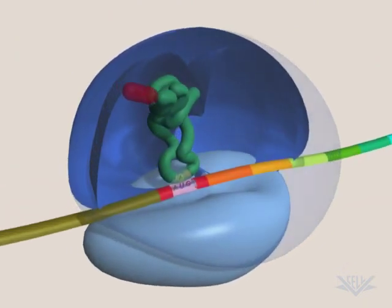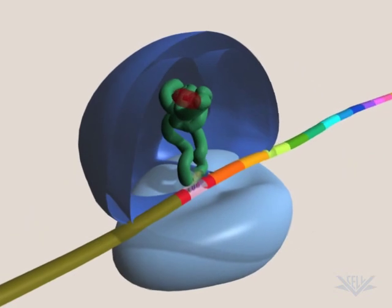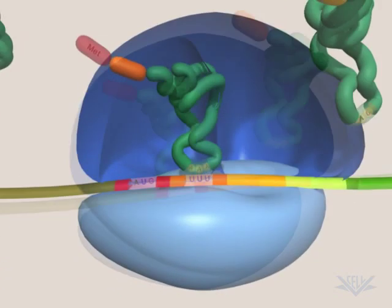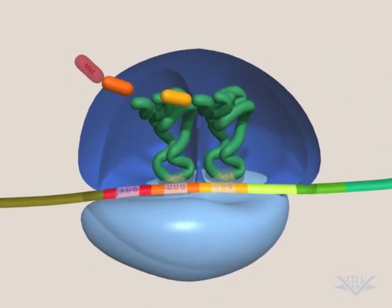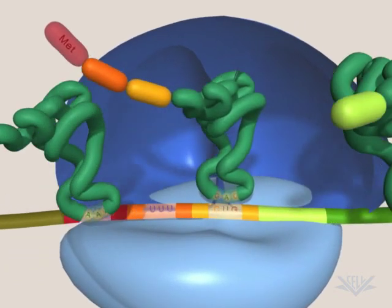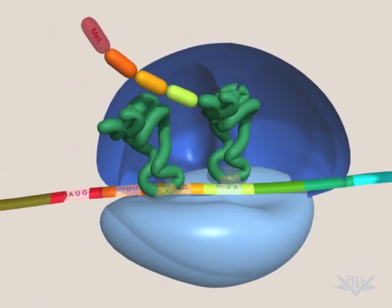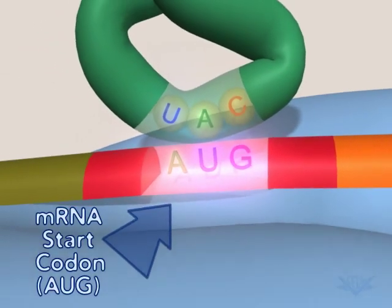As translation starts, a tRNA molecule binds to it and delivers the correct amino acid. As the protein grows, additional amino acids are brought into place by the correct tRNA molecules. The correct tRNA is determined by triplet codes found in the mRNA.